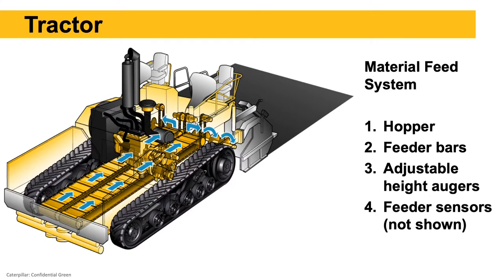Looking at the tractor, it pulls or tows the screed, but it really is the material feed system. We've got the hopper that receives the mix from the trucks or from the MTV, slat conveyors with feeder bars that convey the mix from the hopper back to the augers, adjustable height augers in front of the screed that we can raise or lower, and feed sensors back at the screed that control the rate of flow of mix from the conveyors to the augers and across the face of the screed.